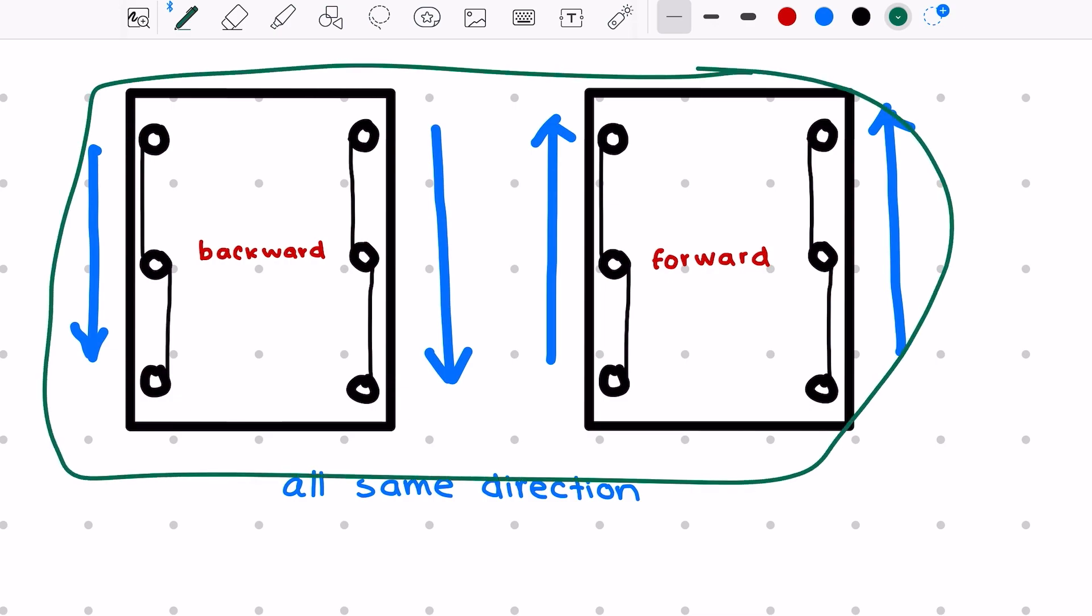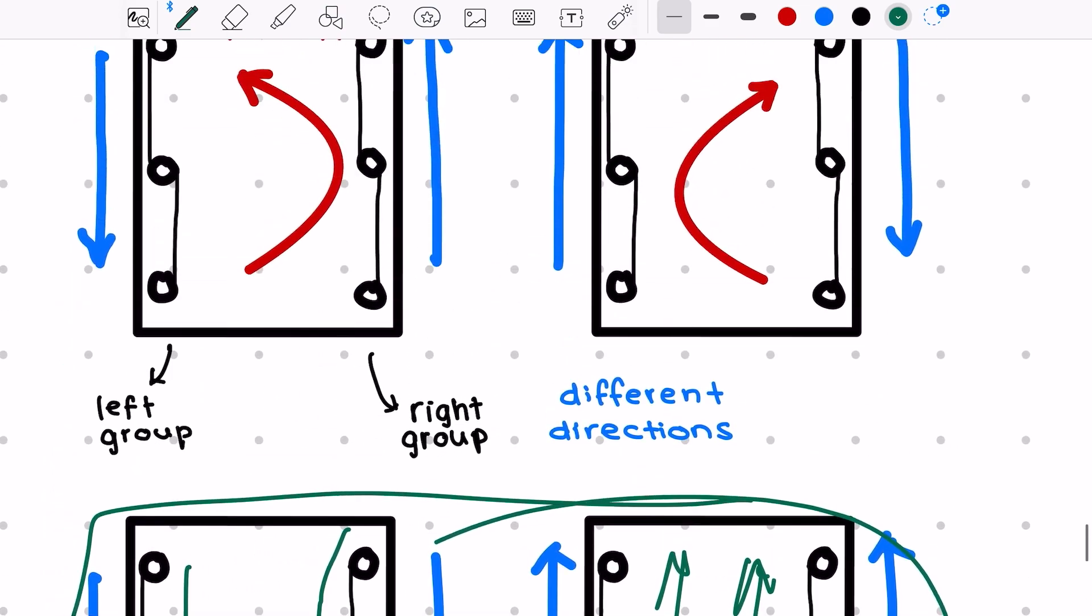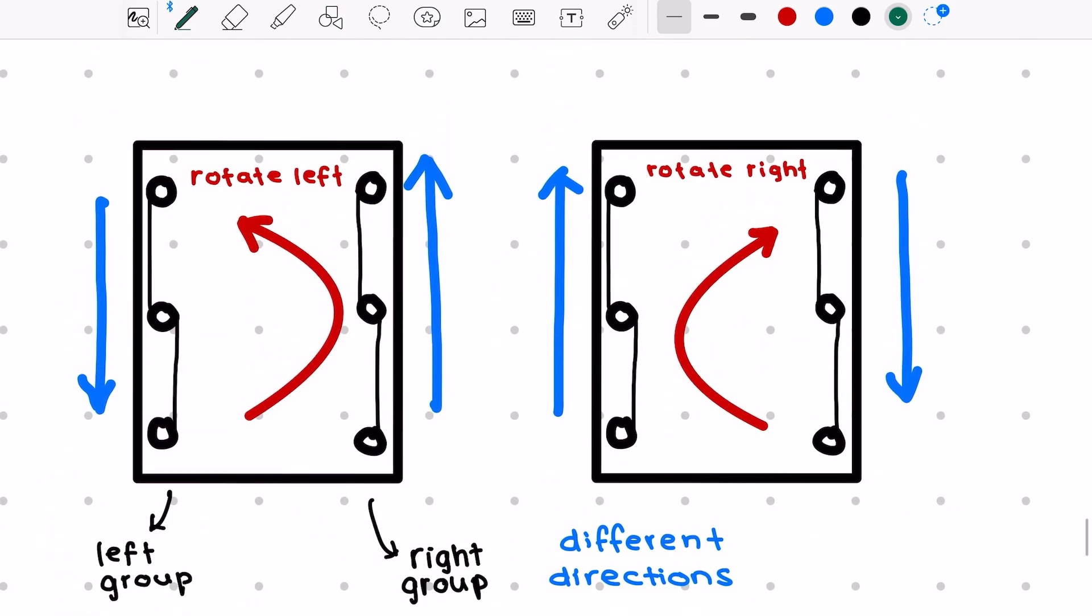In these two cases, the wheels are going in the same direction, either all backwards or all forwards. Now this causes the robot overall to go backwards or forwards. However, in these two cases, the wheels are going in opposite directions, and so this can cause the robot to rotate either left or to rotate right.